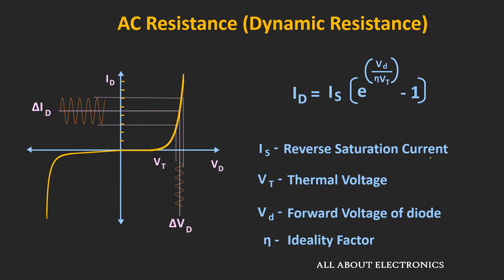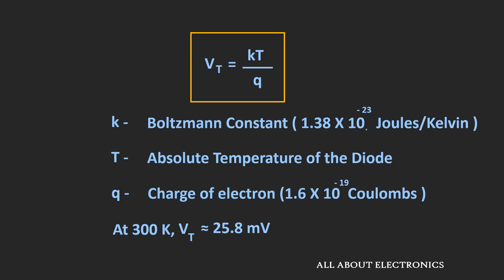In the diode equation, Is represents the reverse saturation current — the current flowing through the diode in reverse bias. Vt is the thermal voltage, Vd is the forward voltage, and η is the ideality factor, which for a diode is in the range of 1 to 2. Here we assume the ideality factor is 1. The thermal voltage is defined as KT divided by Q, where K is Boltzmann's constant, T is the diode temperature, and Q is the charge of the electron. At room temperature of 27°C (T = 300 K), the thermal voltage is approximately 26 mV.